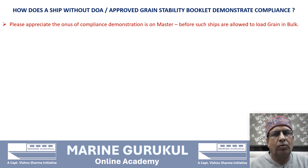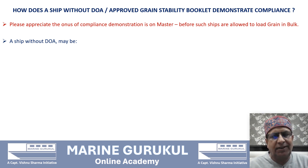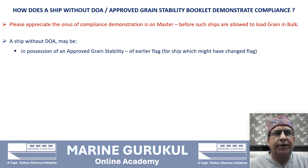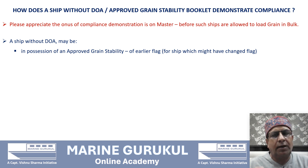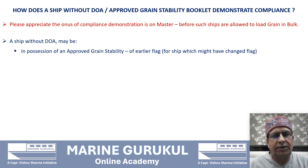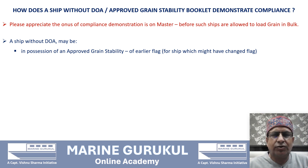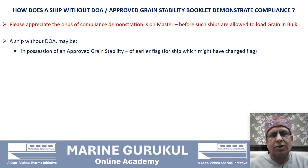Before such ships are allowed to load grain in bulk, a few hypothetical scenarios may arise. A ship without a DOA could be in possession of an approved grain stability booklet but may not be in possession of a DOA. This approved grain stability booklet may not be from her current administration — there might have been a change of flag. She may have an approved grain stability booklet from the earlier administration and may still not have received her Document of Authorization from the new flag administration. In such a case it may be easier for the master to demonstrate compliance, because he already has the calculated volumetric heeling moments captured in such a stability booklet.